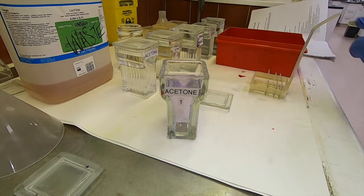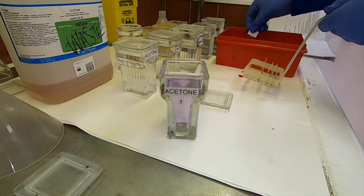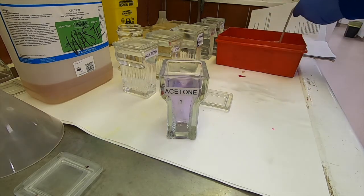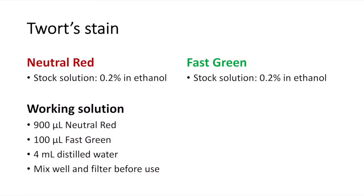I do think that I get better results if I blot immediately prior to going into the acetone. Assuming that our decolorisation step has been performed effectively, such that only the positive organisms are now stained, we then just need to apply a counterstain to more clearly illustrate any negative organisms present within the tissue section. The two alternatives we'll explore are firstly the Twort stain.